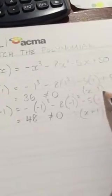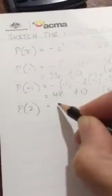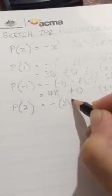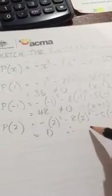We'll try 2. So we've got negative of 2 cubed minus 8 lots of 2 squared minus 5 lots of 2 plus 50. So I've got negative 8 minus 8 lots of 4 minus 5 lots of 2 plus 50 equals 0. Oh, so that's pretty good. That tells me that x minus 2 is a factor.